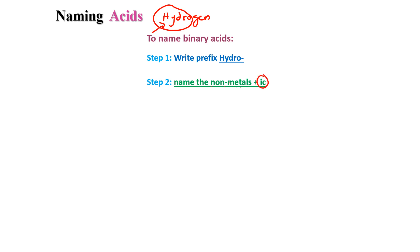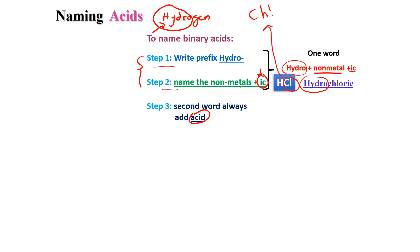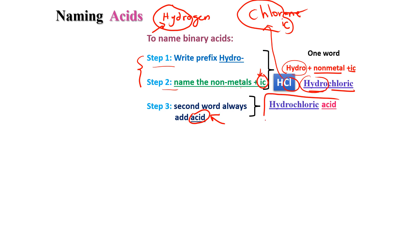Step 3: all of this — hydro + the non-metal + IC — is one word. The second word is always 'acid.' Example: HCl. Step 1 and 2: write 'hydro,' then Cl is chlorine — remove the 'ine' and add 'ic' so it becomes 'chloric.' Put together: 'hydrochloric' — one word — then add the second word: 'hydrochloric acid.'